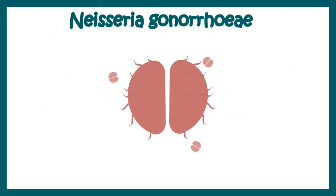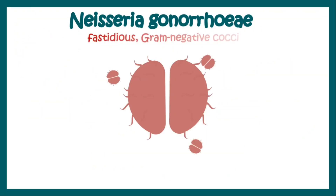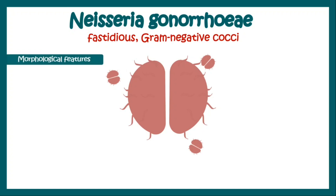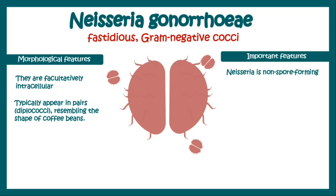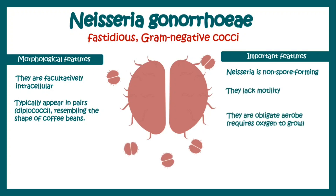Neisseria gonorrhoeae is a fastidious gram-negative cocci. They are facultatively intracellular and typically appear in pairs as diplococci resembling the shape of coffee beans. Neisseria is non-spore forming, lacks motility, and is an obligate aerobe, meaning they require oxygen to grow.